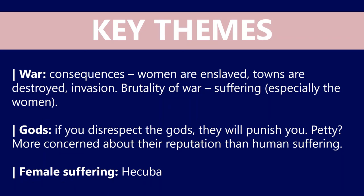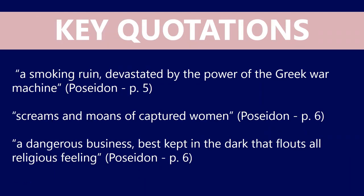Speaking of quotations, let's look at some key ones. I've just picked out three, though there are many more. First, the imagery 'smoking ruin' to describe Troy, 'devastated by the power of the Greek war machine' — even that description is quite vivid. Then more language which describes the pain and suffering of the women: 'the screams and moans of captured women.' And the quotation to describe Agamemnon's behavior: 'a dangerous business, best kept in the dark, that flouts all religious feeling.' Agamemnon eventually will be killed at the hands of his wife.